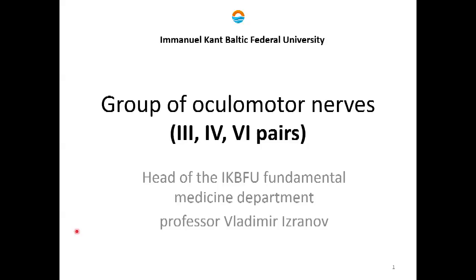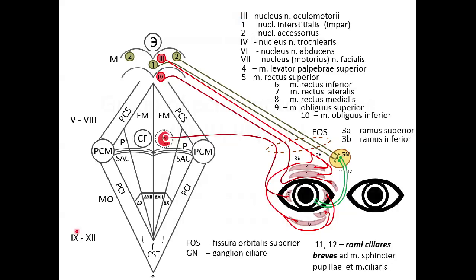Good morning, dear colleagues. First of all, I would like to congratulate you on the new semester. It will be difficult but very interesting. We shall begin from the cranial nerves, and today's theme is the group of oculomotor nerves — that means the third, fourth, and sixth pairs of cranial nerves. Our task will be to draw this picture; it's quite complicated and you need to know it by heart and understand each detail. I propose we draw it step by step from the beginning.